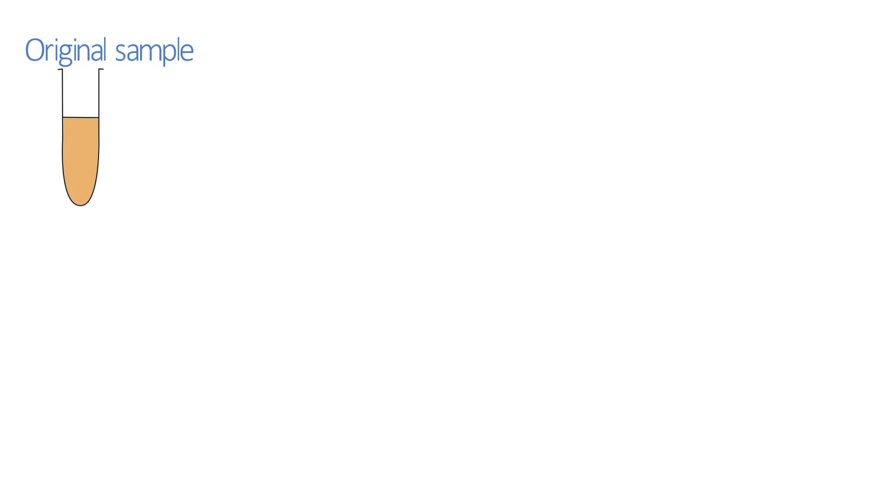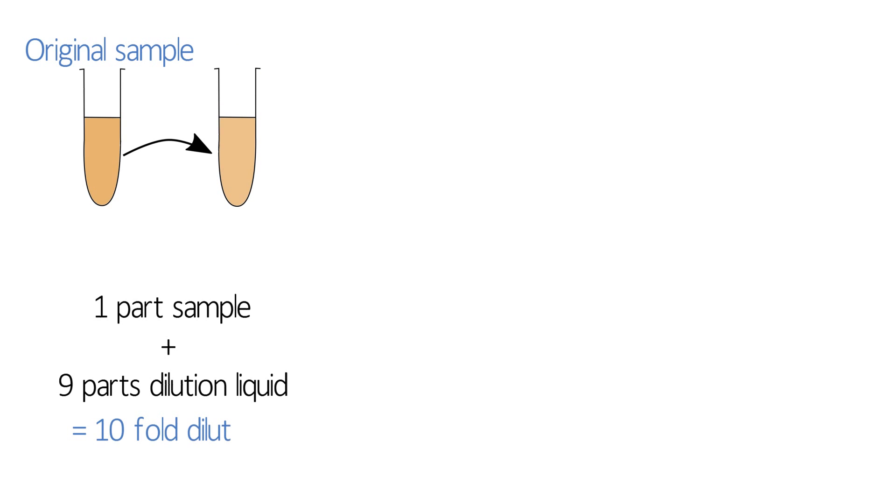To do this, we're going to make up several tenfold dilutions. So this means we'll add one part of the sample to nine parts of a diluting liquid so that the new tube is ten times more dilute than the previous one. So for example, if the original sample had 100,000 colony-forming units in it, the new one should have 10,000 colony-forming units. We'll call this the ten to the minus one dilution.